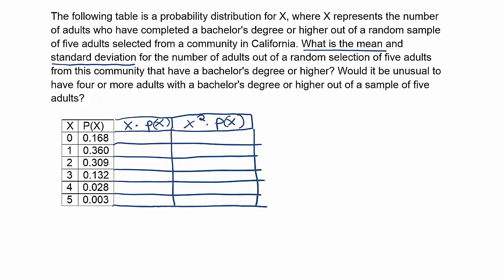Okay, so let's begin first with the basic x times P(x). So if I do zero times this number, I will, of course, get zero because zero times anything is zero. And then one times anything is itself. So of course, I'll know the next one would be 0.360, right? And then I'll have to do two times 0.309, which will give you 0.618. 0.618, so on and so forth.